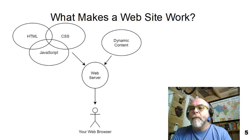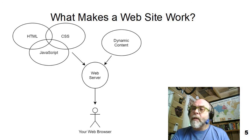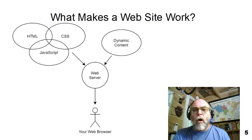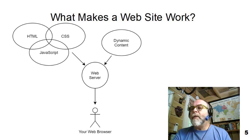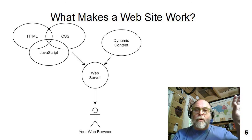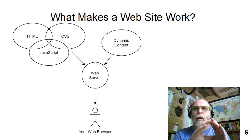HTML is only one part of a website. This class goes into HTML, CSS, and a little bit of JavaScript. What makes a website work are those three technologies working together — you can see that in the Venn diagram here, where HTML, CSS, and JavaScript kind of work together. There's also dynamic content which comes from servers and databases, and there's a system in the middle called the web server.